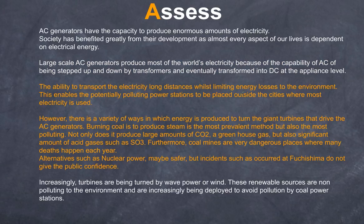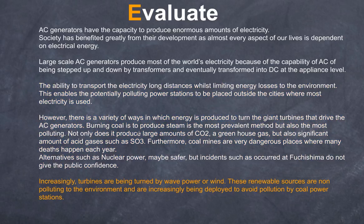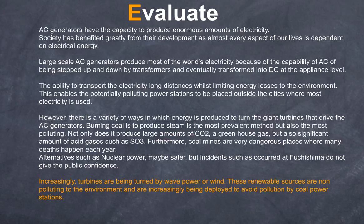Here we have an assess section: aspects affecting the environment, including a positive impact — power stations are located far away, resulting in less local pollution — but with coal-fired AC generation there is also the production of pollution, a negative impact. Finally, there's an evaluation suggesting that renewable sources are a better option to avoid pollution. They make a judgment towards the end: although there are positive impacts because we can transform electricity and place generators remotely, using renewable resources can diminish the environmental impact of coal-fired power stations.